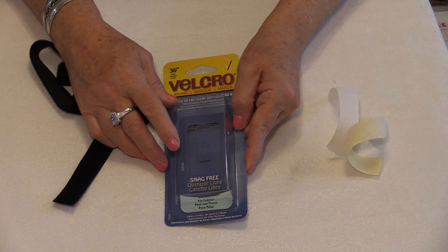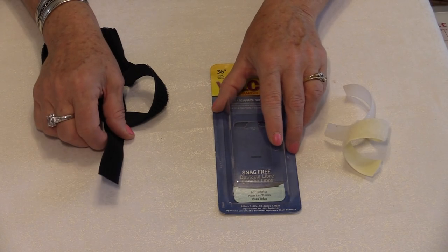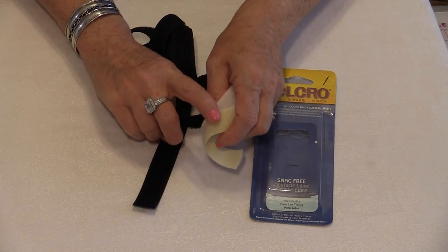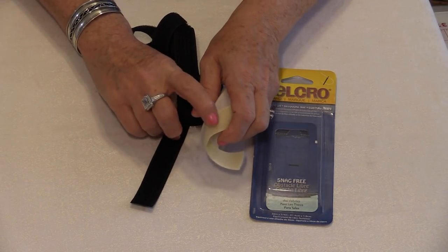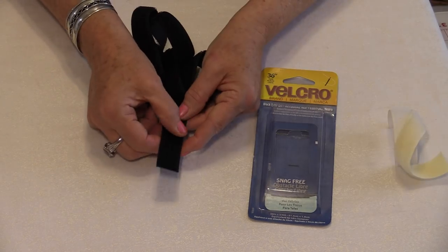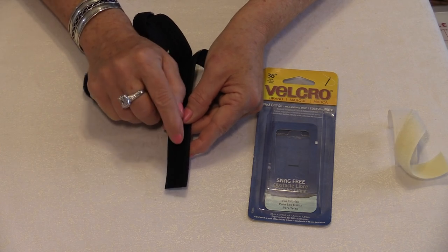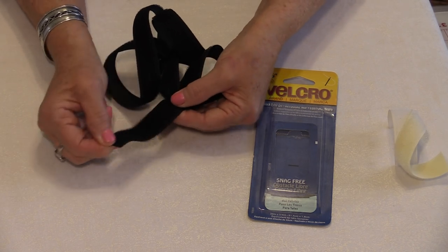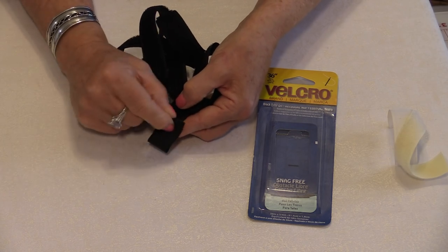The new Velcro is snag-free and you only need one piece. What has been done is the two pieces have been joined together. So this has the rough and the soft side built right inside so it will attach onto itself.